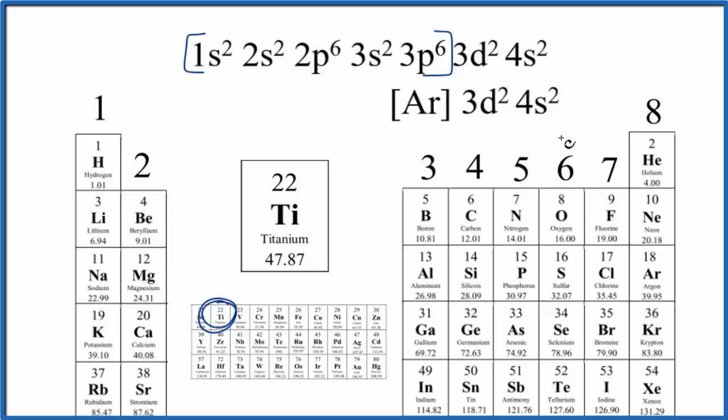When titanium forms ions, when it bonds with other elements, and it loses electrons, often it becomes Ti4+. When it does that, it's going to lose these electrons here. So we could just write 0 in for Ti4+.